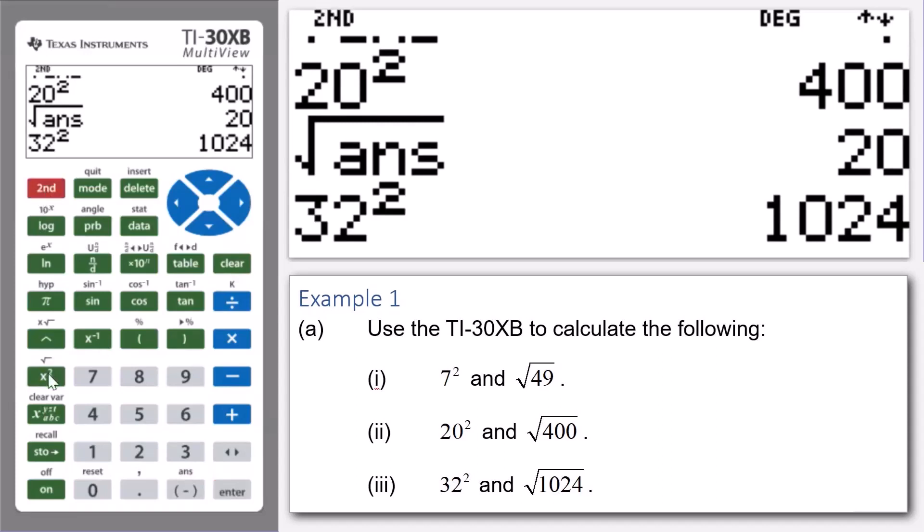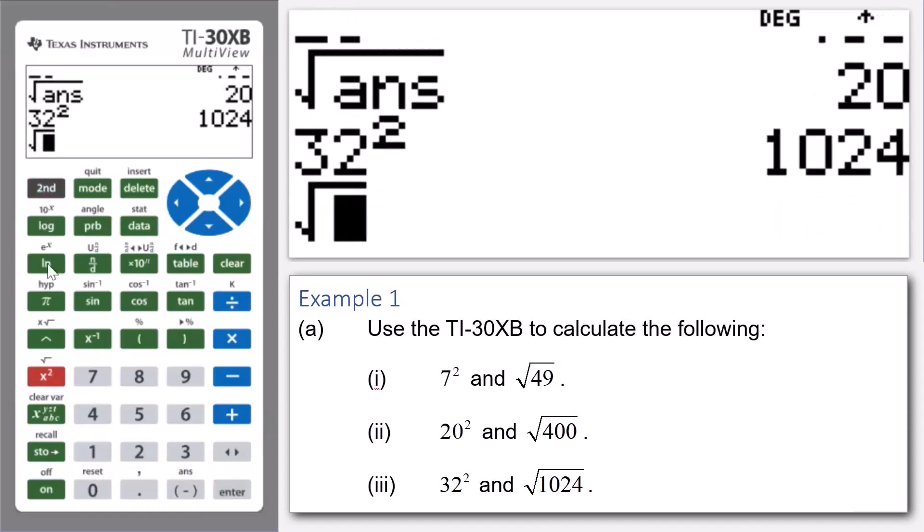Then we press 2nd X squared, then press 2nd and then the negative sign key. Now we're calculating the square root of 1024, we press enter and we get the answer 32.